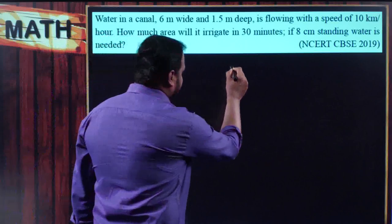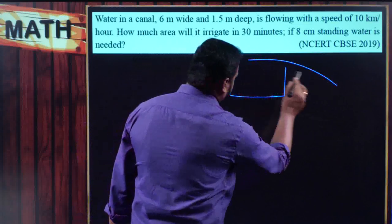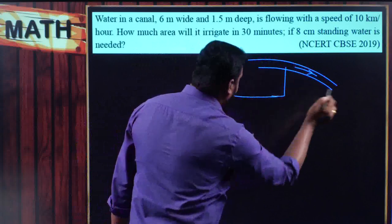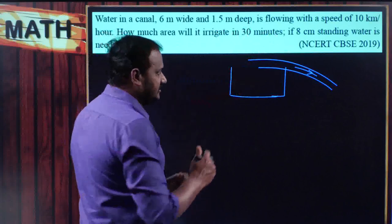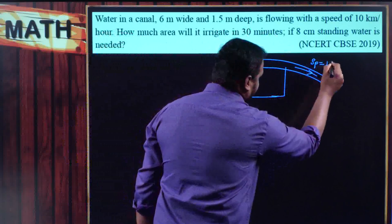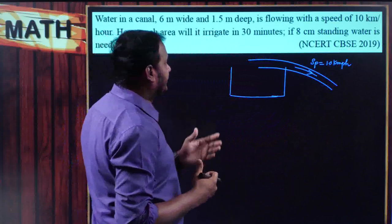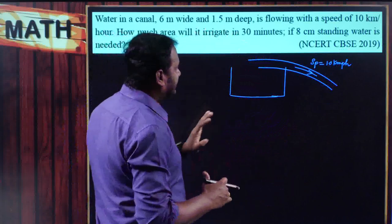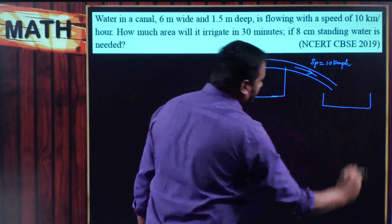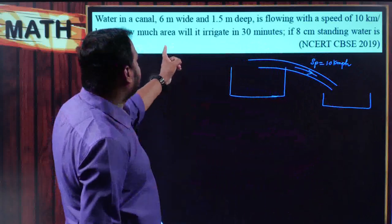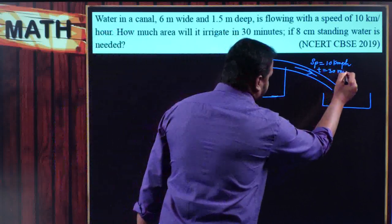I am drawing a canal here. Water is flowing from the canal, and the speed of the water flow is 10 kilometers per hour. The required information is how much area will it irrigate. Water is flowing from one place to another, and how much area will it irrigate in 30 minutes — so time taken is equal to 30 minutes.